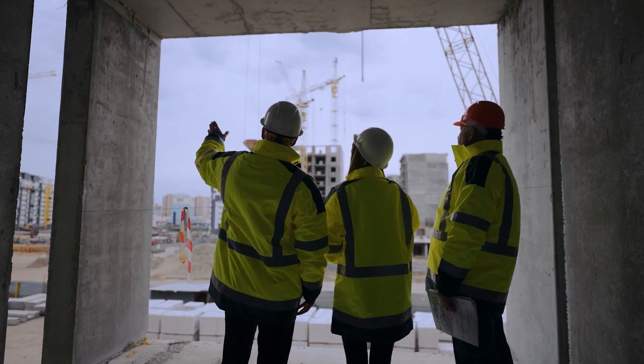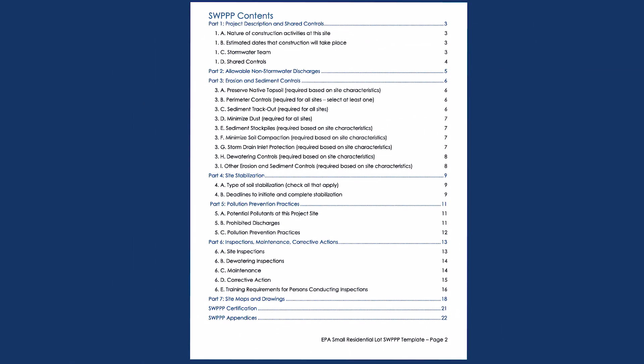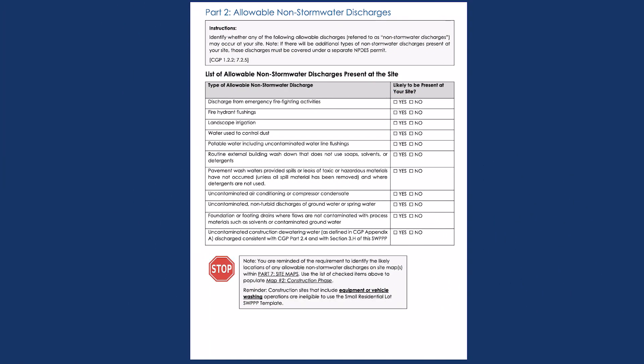The rest of the template follows a similar guiding format for each section, and you should provide the same level of professional detail throughout. For construction projects meeting certain requirements, you have the option to fill out a streamlined template specific for small residential lots. This condensed template retains many of the same sections present in the standard format, but presents BMP selection in a more straightforward, multiple-choice style.